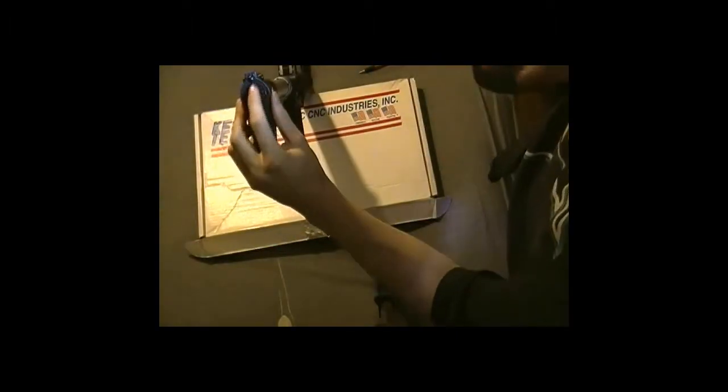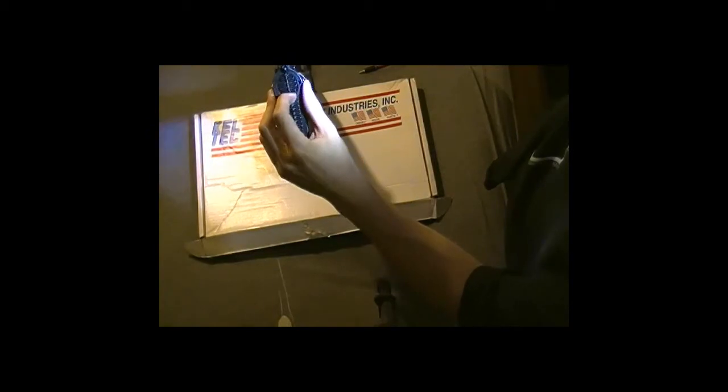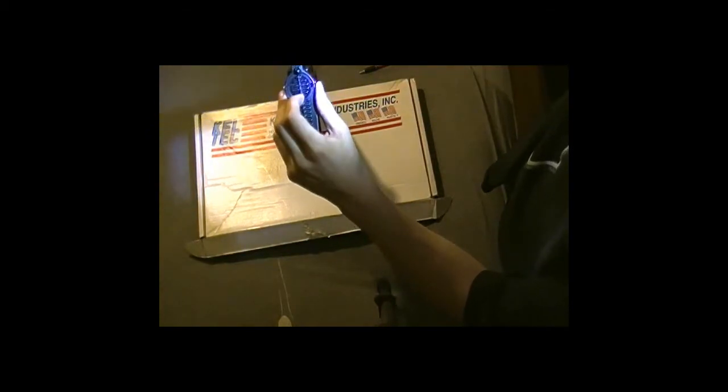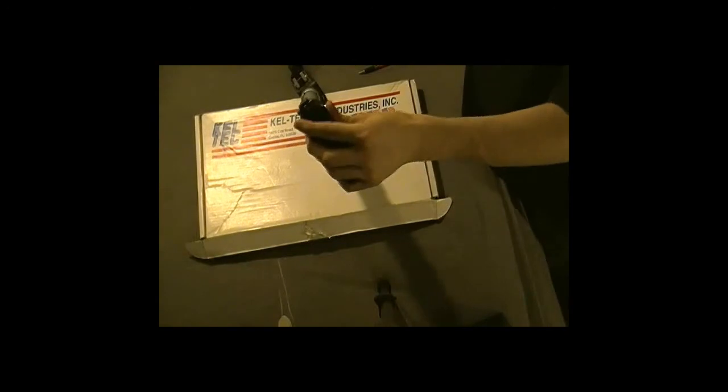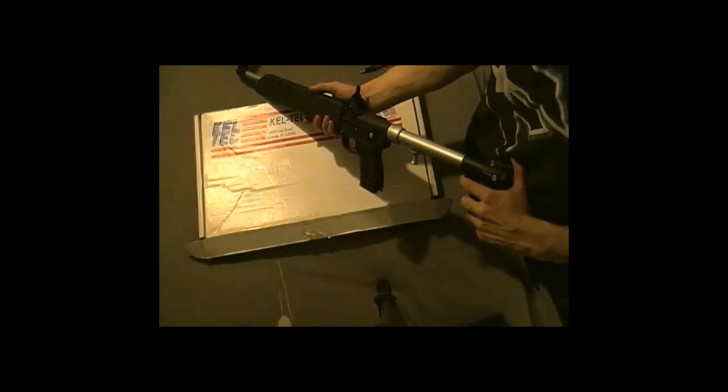Now, to line it up, this black notch right here. You want to line up the line on the buffer with that notch. These are disconnected from your channel. And that is how you take apart and put back together the Kel-Tec Sub 2000.